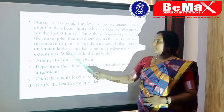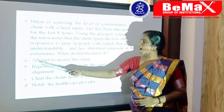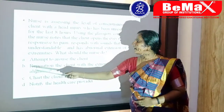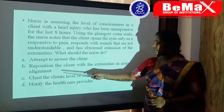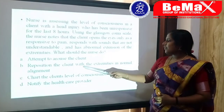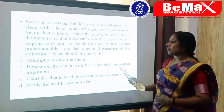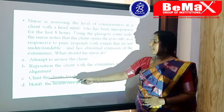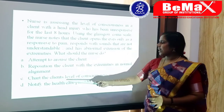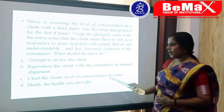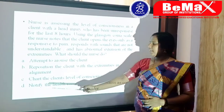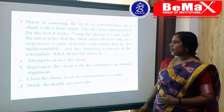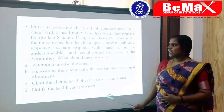Move on to options. Option A: Attempt to arouse the client. Option B: Reposition the client with the extremities in normal alignment. Option C: Chart the client's level of consciousness as coma. Option D: Notify the healthcare provider. Let's check.